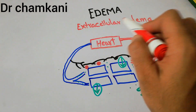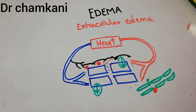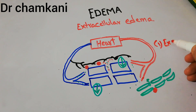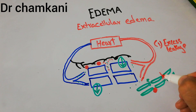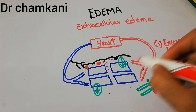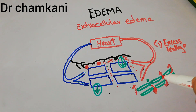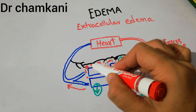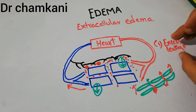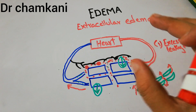The causes of extracellular edema — excess fluid accumulation in the extracellular spaces — include two main causes. The first is abnormal or excessive leakage of plasma from the capillaries. A small amount of fluid normally leaves the capillaries, but sometimes excessive leakage occurs and fluid starts accumulating in the extracellular spaces. The leakage may be so high that the venous side cannot take it back, leading to extracellular edema.